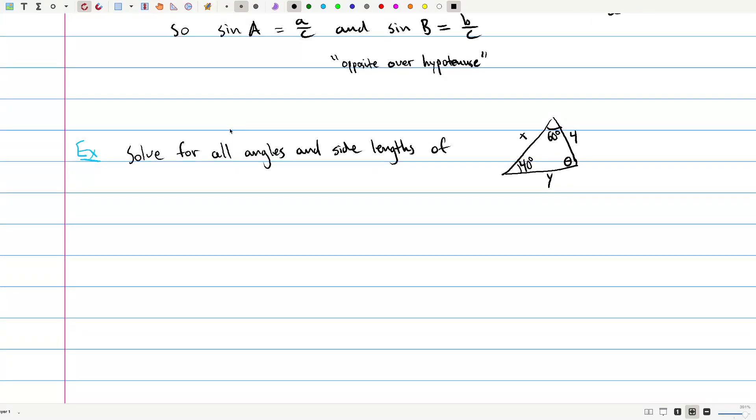Okay, so we'll just do one problem here. We want to solve for all the angles and side lengths of a triangle where two of the angles are known, 40 degrees and 60 degrees. One angle is unknown. And we know that opposite the 40 degree angle is a side length of 4. So how are we going to do this?